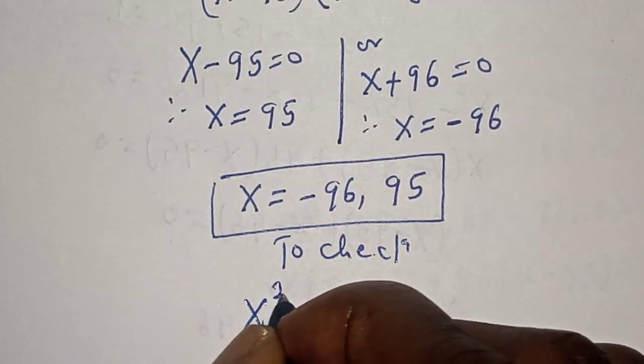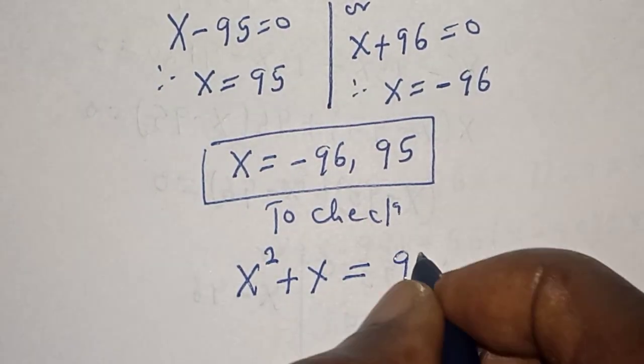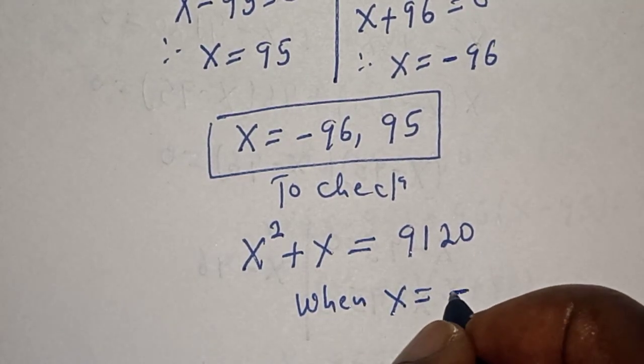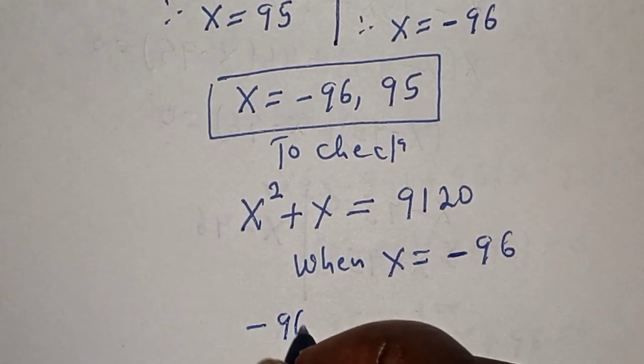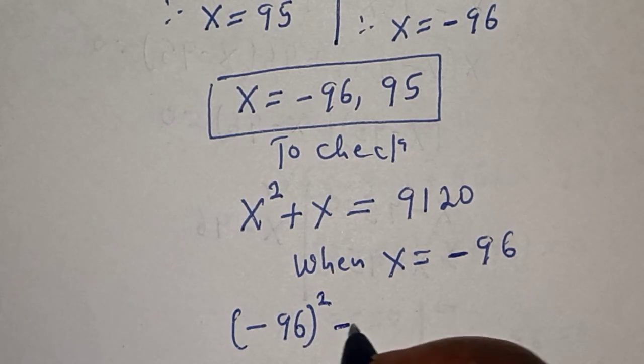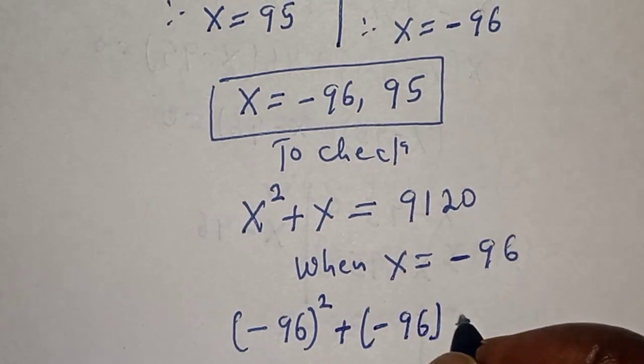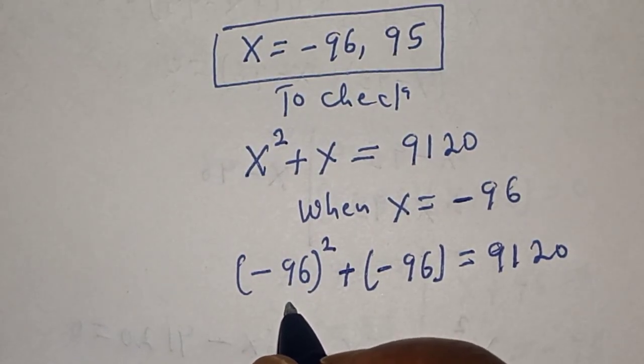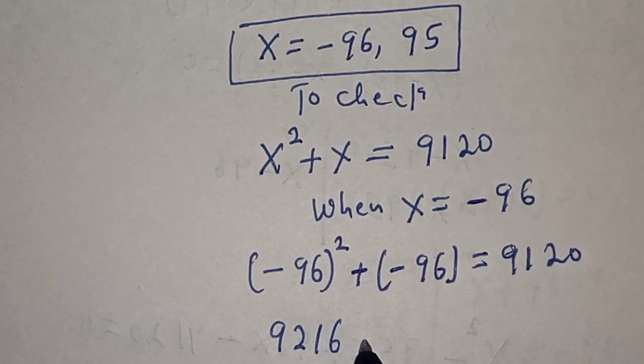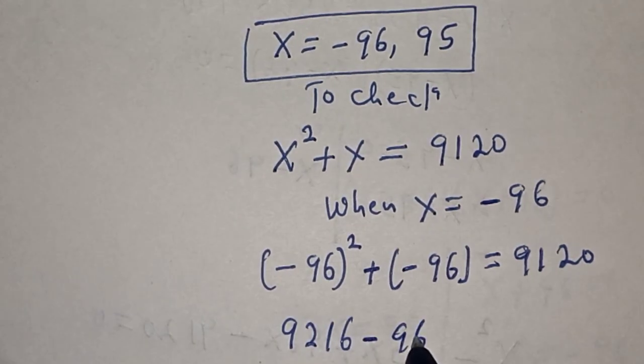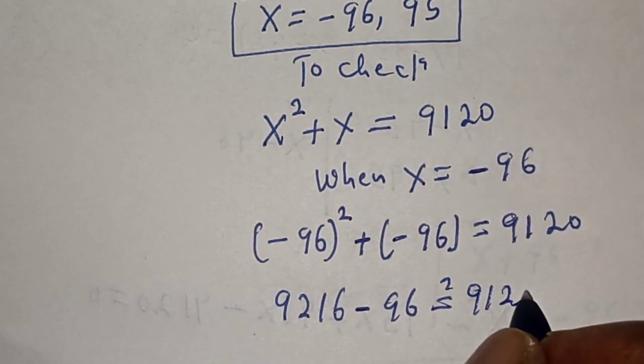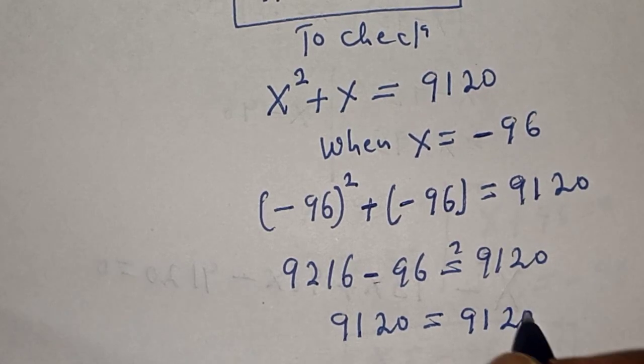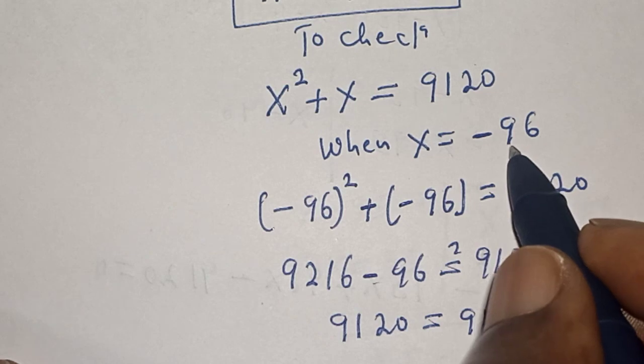We have the given equation x squared plus x must be equal to 9,120. When x is equal to minus 96, we have minus 96 squared plus minus 96 must be equal to 9,120. Minus 96 squared is 9,216 minus 96 must be equal to 9,120. If you subtract this, we have 9,120 is equal to 9,120. We satisfy the given equation at x is equal to minus 96.